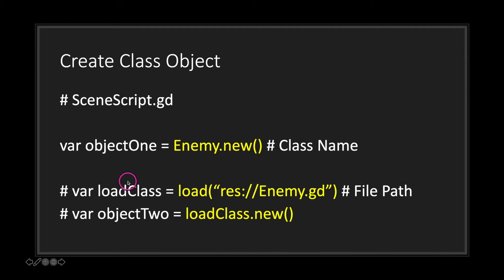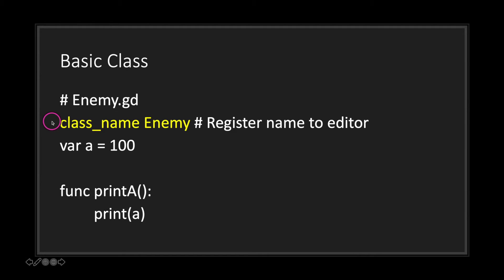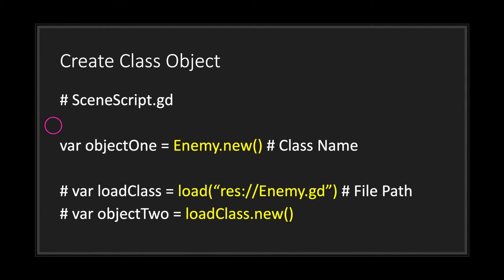First you need to load your class into the current class. You load it using the load keyword followed by an absolute or relative path inside double quotations as a string value — this is the global load method. After loading your class and assigning it to a variable, you call that variable and use the new method. Using the class_name keyword essentially loads the class behind the scenes for you, which is why you only need one line of code.